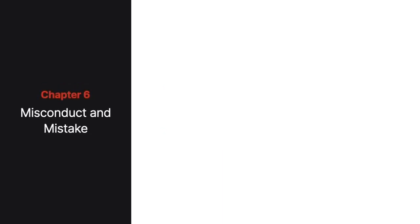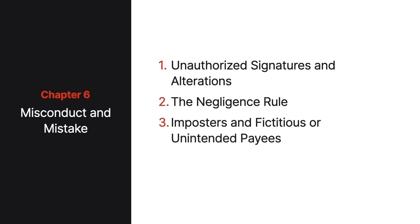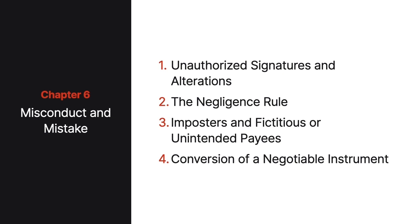Chapter 6 unpacks how fraud and other misconduct affect the rights and duties of parties to a negotiable instrument. Specifically, we'll delve into the rules surrounding unauthorized signatures and alterations, including the negligence rule, the imposter rule, and the rules governing fictitious or unintended payees. Then we'll cover the rules concerning an Article 3 claim for conversion.